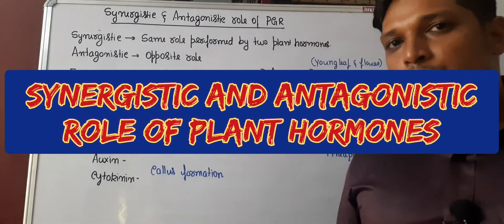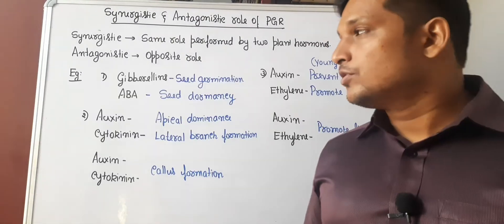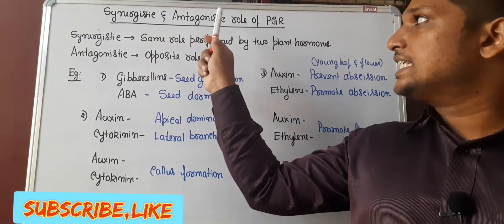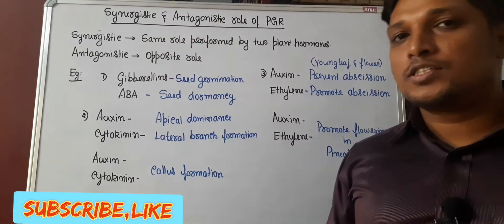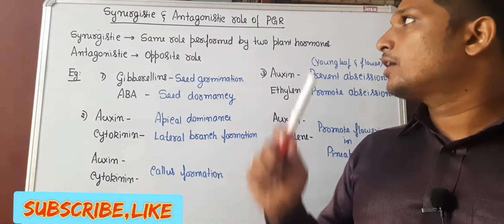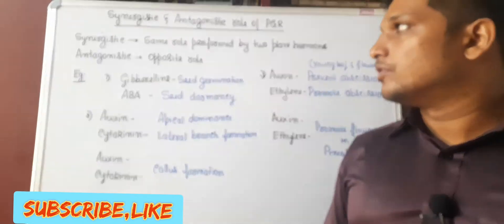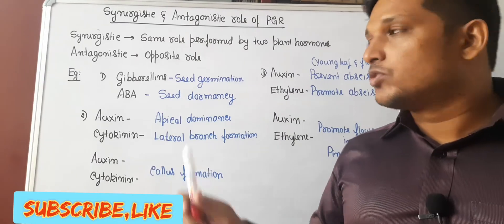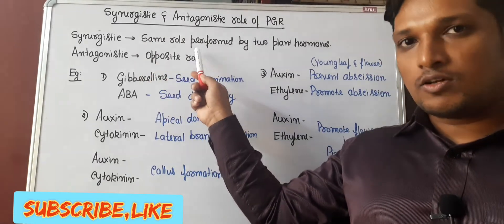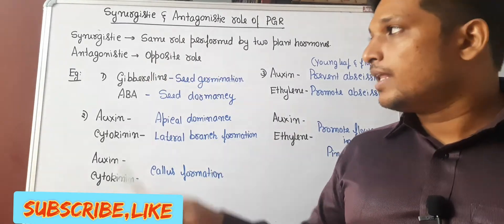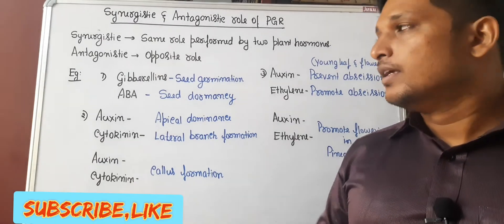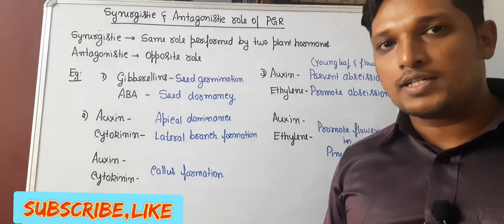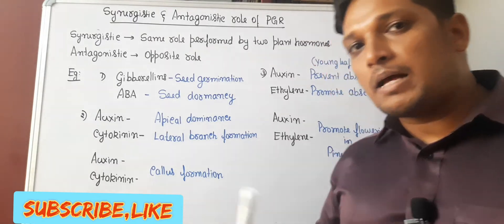Hello everyone, welcome to my channel. Today we are going to learn what is the meaning of synergistic and antagonistic roles played by plant growth regulators or phytohormones. If two plant hormones perform the same function or same role, they are playing a synergistic function. If they perform opposite roles, then it is an antagonistic function. Let us take examples.